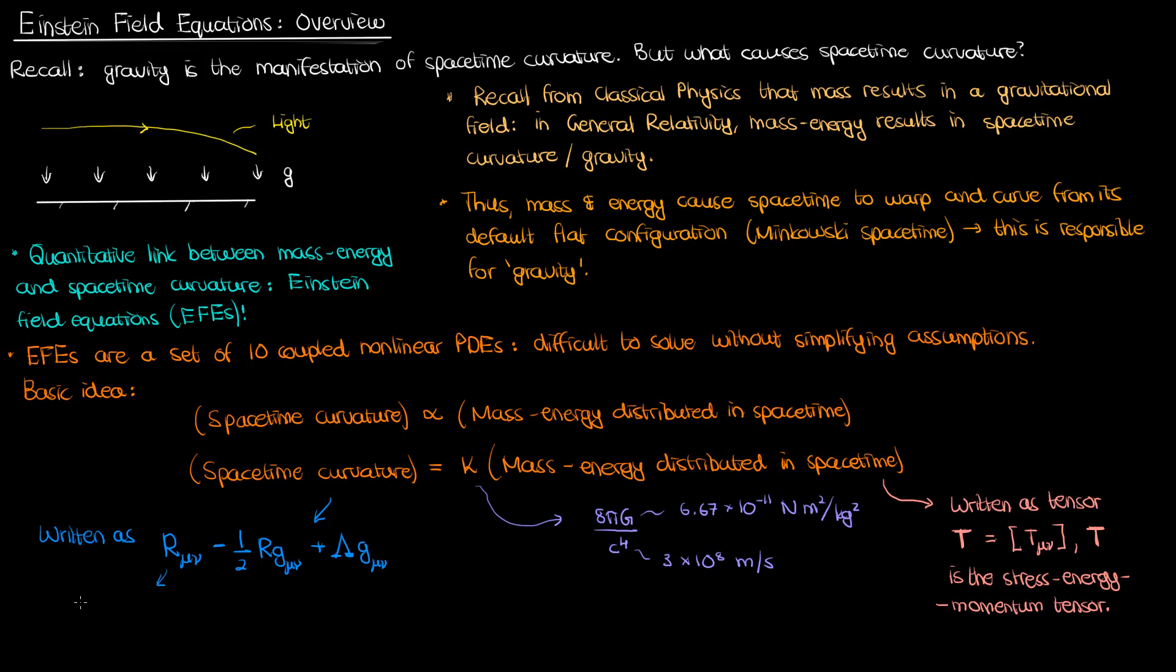The components of these tensors are once again written with the Greek subscripts mu and nu. Again, this R with the subscripts denotes the component of the Ricci tensor. This capital R is the Ricci scalar, which you get from taking the trace of the Ricci tensor. The G is the metric tensor with components G mu nu, and the capital lambda is a special quantity known as the cosmological constant.